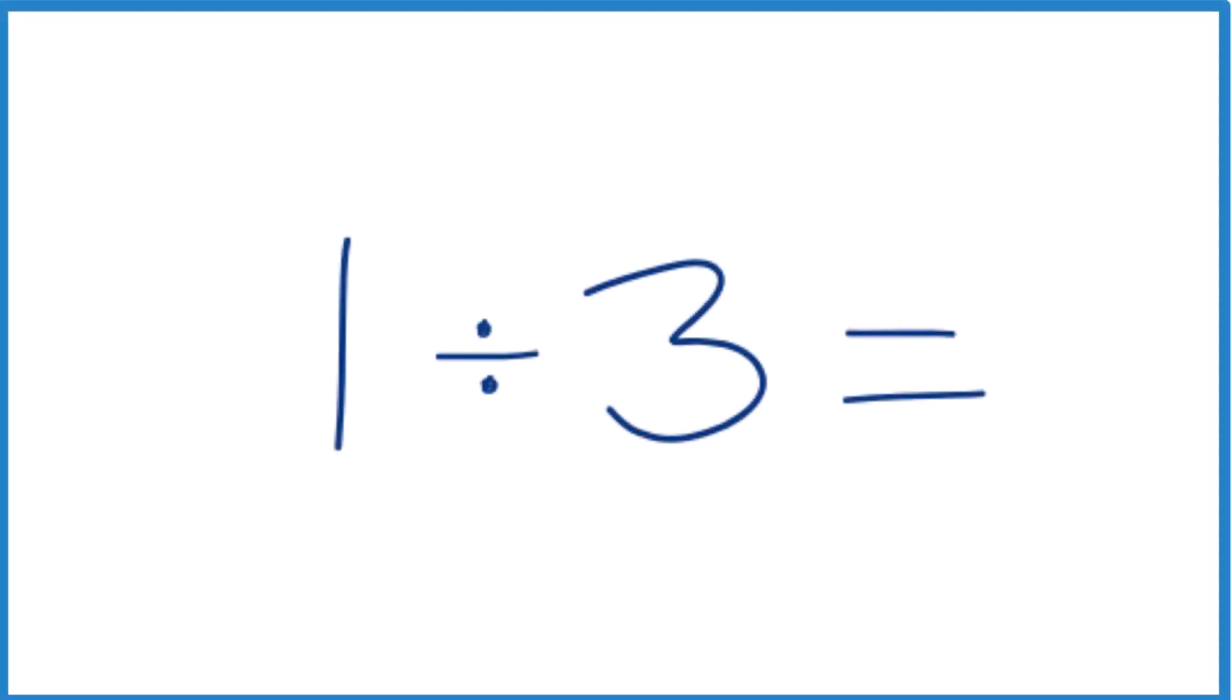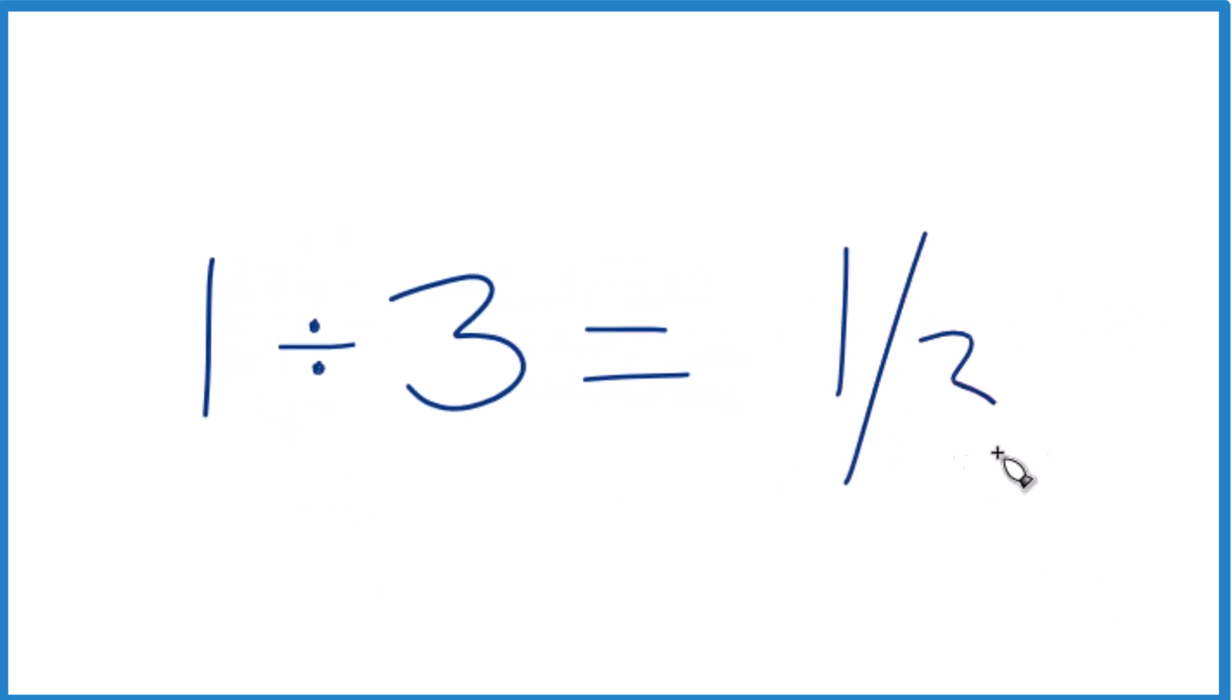All right, so we want to figure out 1 divided by 3, what do we end up with? So we could just write 1 divided by 3 as a fraction. It's 1 third, 1 over 3, and that's one way to do it.